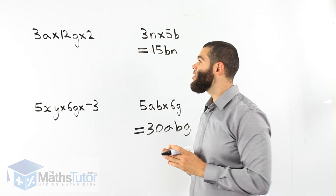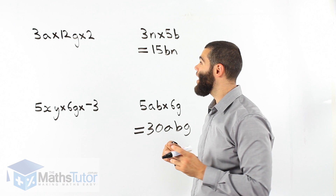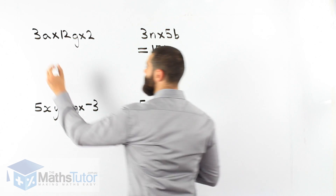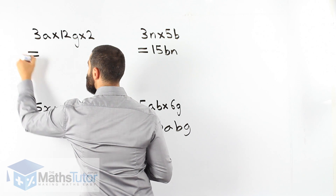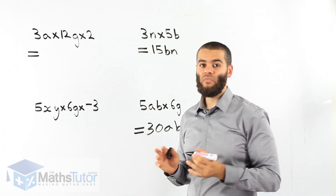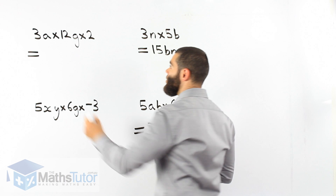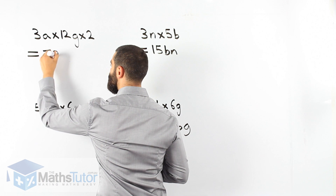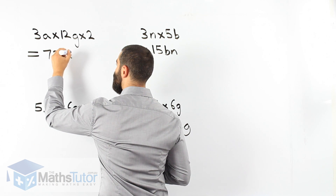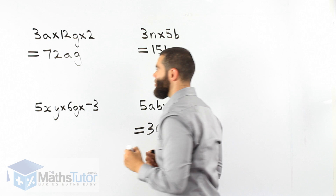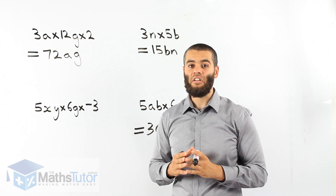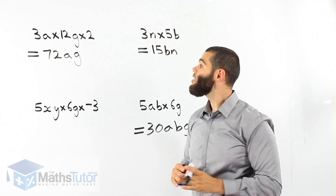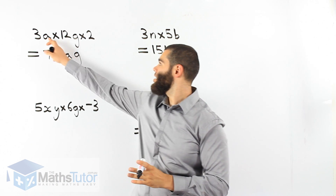Now we have 3a times 12g times 2. Again, we multiply everything together. 3 times 12 is 36, times 2 is 72. We put the pronumerals a and g into our answer. Our final answer is 72ag.